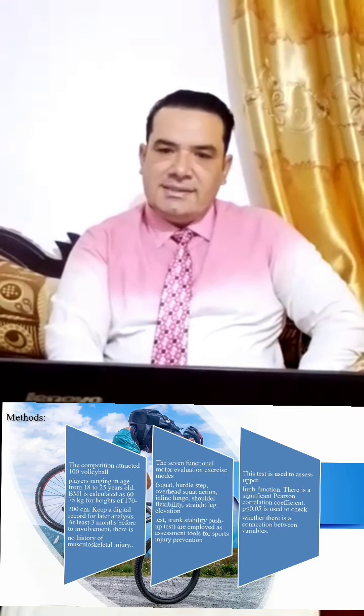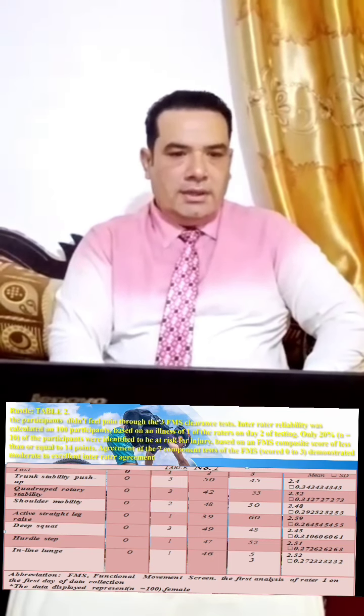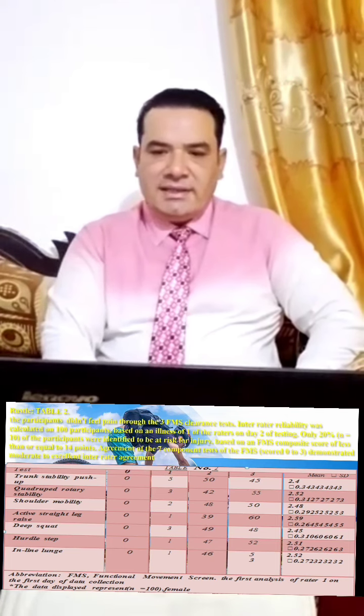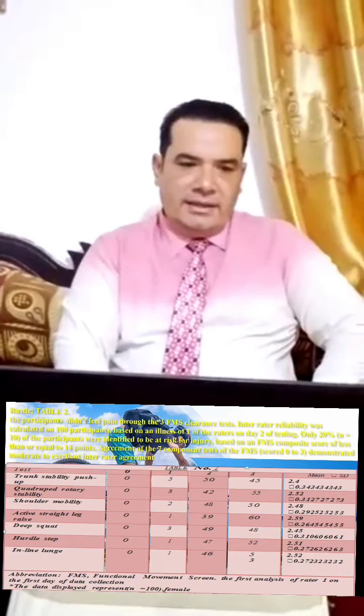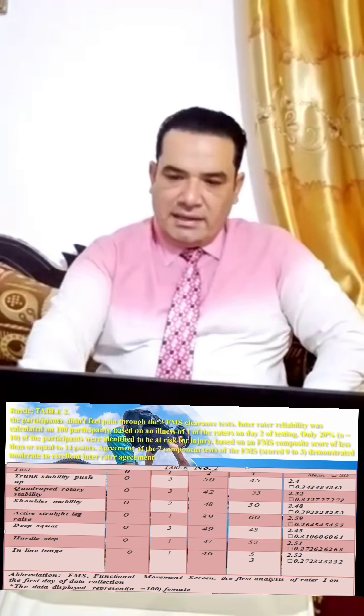From the results shown in the table, the functional movement screen test was analyzed from the first day of data collection. The data represents 100 female players. Results show that high scores from measuring upper limb function are different from their performance screen test scores, with r equal to 0.178 and p-value of 0.01, indicating a significant connection between them.